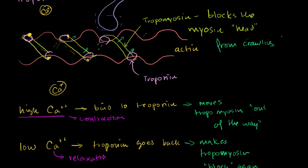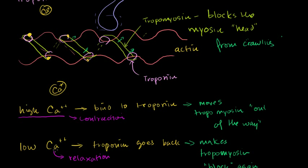The next obvious question is how does the muscle regulate whether we have high calcium concentration and contraction, or low calcium concentration and relaxation? Or even better: how does the nervous system tell the muscle to contract — to make its calcium concentration high and contract — or to make it low again and relax?